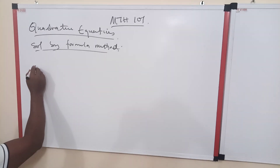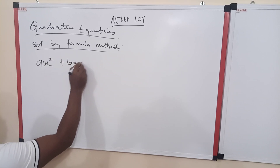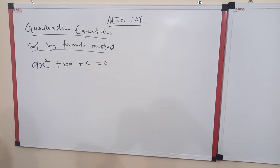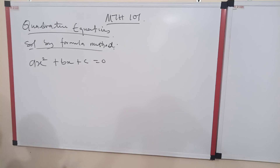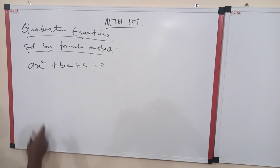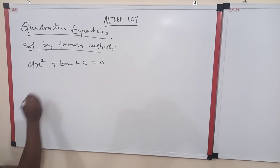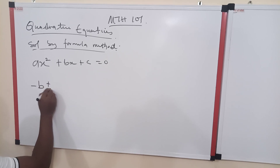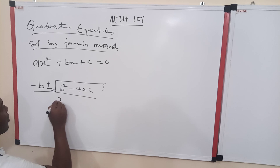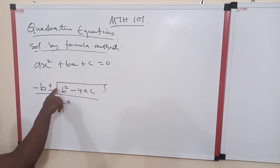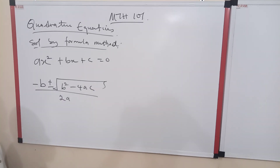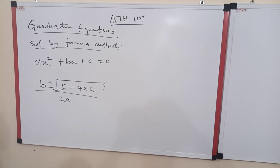As we have shown, this is the general form of a quadratic equation. In solving this, we can approach these equations using the factorization method and also the completing the square method. Now, this formula method is another method we can use in determining the set of solutions of a quadratic equation. The formula is of the form negative b plus or minus the square root of b squared minus 4ac, all over 2a. We can also derive this formula from the general form using the completing the square method.